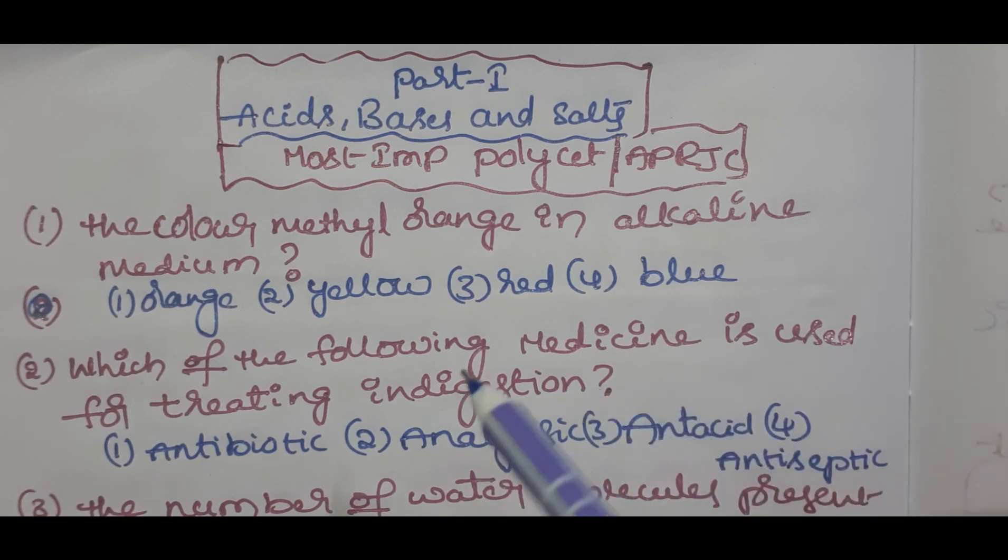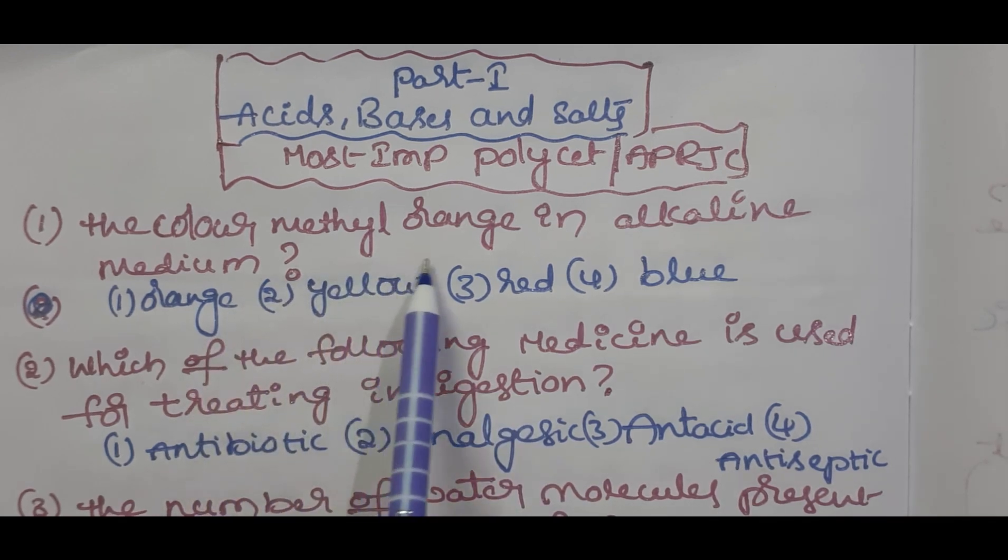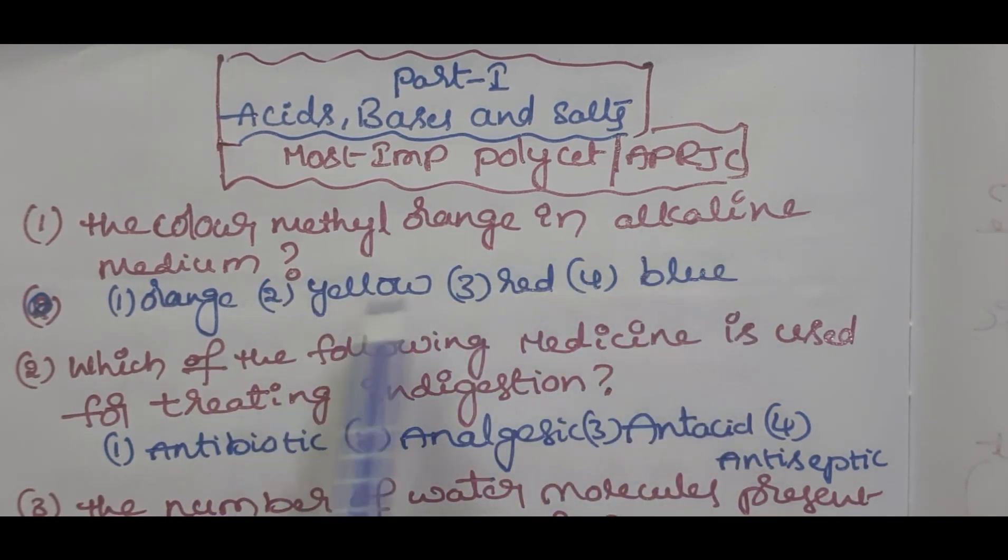First one students: the color of methyl orange in alkaline medium is orange, yellow, red, and blue. Which of the following medicine is used for treating immunization? These are the four options you can see: antibiotic, analgesic, antacid, antiseptic.